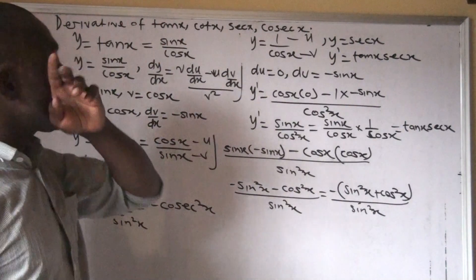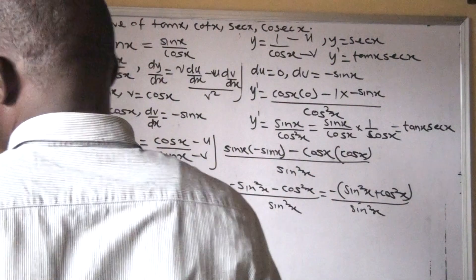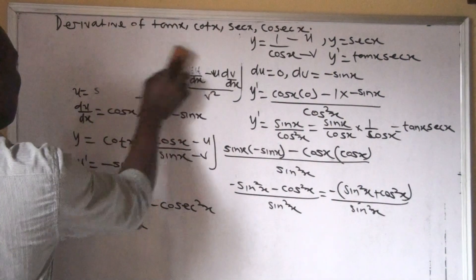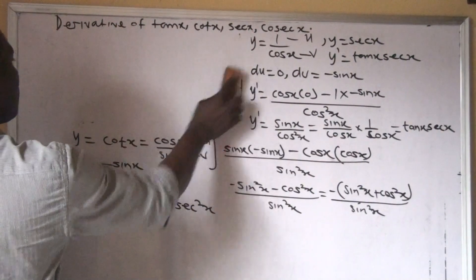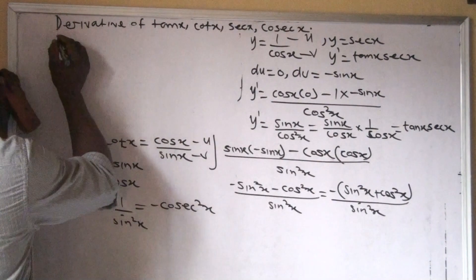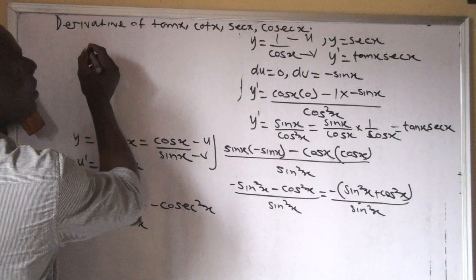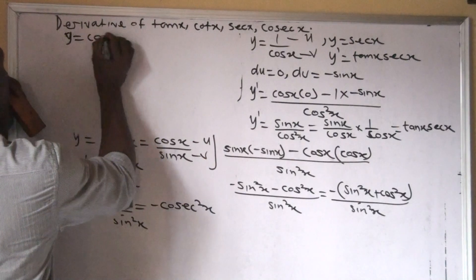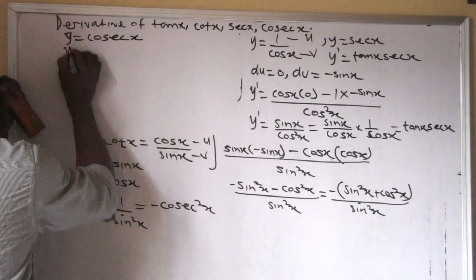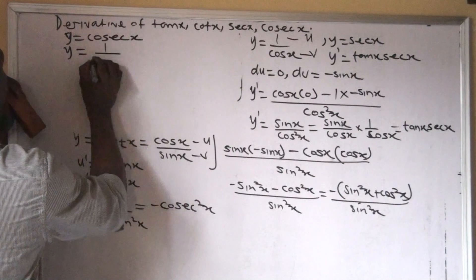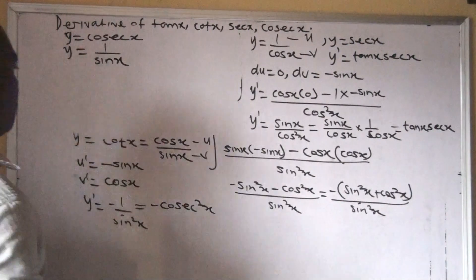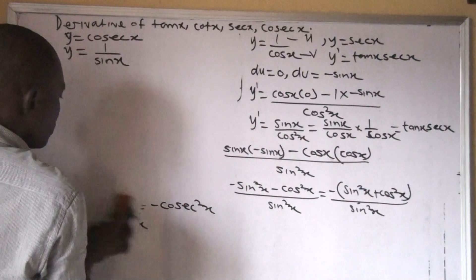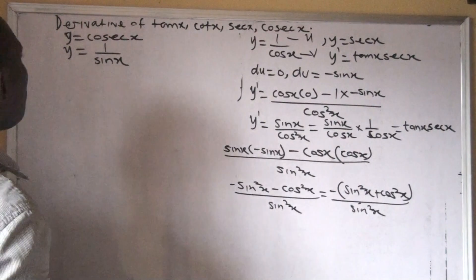Now the last one — let's do cosec. Cosec is the inverse of sine. So if y equals cosec x, that means y equals 1 over sin x. Now let's find the derivative of this similarly.